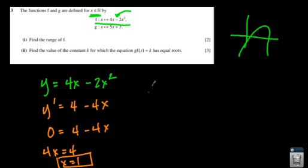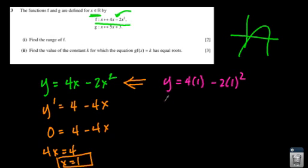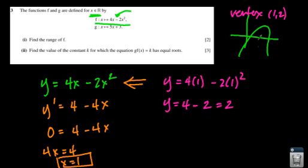And now I actually need to find the y coordinate of the vertex. So I plug that back into the original equation. So 4 times 1 minus 2 times 1 squared. So y equals 4 minus 2, which equals 2. So my vertex is (1, 2). That means this point, 2 is the highest. So my range is y is less than or equal to 2, or you could say in interval notation, the range is negative infinity to 2. Either way works.